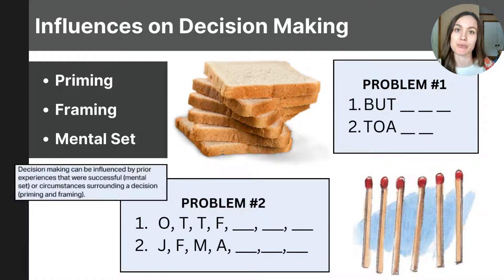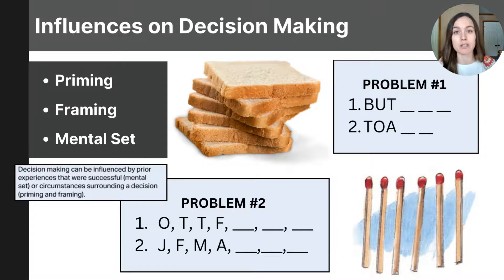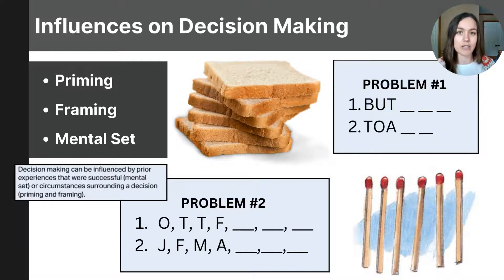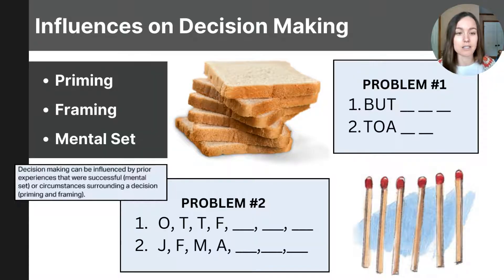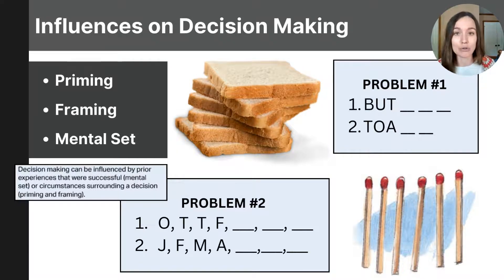As we talk about decision making, there are multiple factors that influence the decisions we make, and you need to be familiar with three: priming, framing, and mental set. Priming is a psychological phenomenon where exposure to a stimulus influences how we respond to a subsequent stimulus, often without even being aware of it. Priming activates associations in your mind, affecting the way we think and process information. For example, if you are shown pictures of bread and then asked to complete word puzzles, you might be more likely to complete the words as butter and toast instead of butler and toads, because seeing bread primed you to answer in that way.